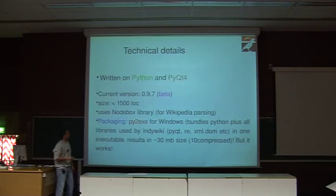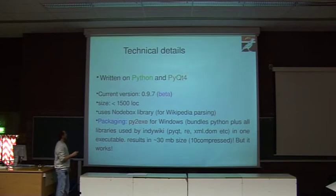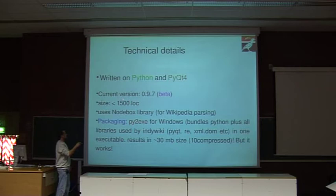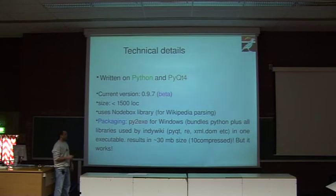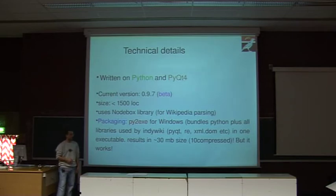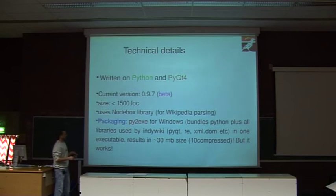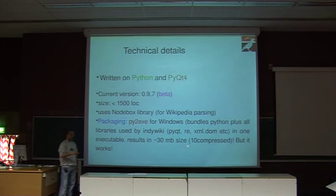The application is written in Python and PyQt4, which powers the GUI. We are still on beta — the project is about three or four months old. It's a small program with very few lines of code, which Python enables. We use the excellent mwclient library to do the Wikipedia parsing, which is the hardest aspect of the application. We also provide executables for Windows users so they don't have to install Python or PyQt. It works, though it results in about 30 megabytes in size.